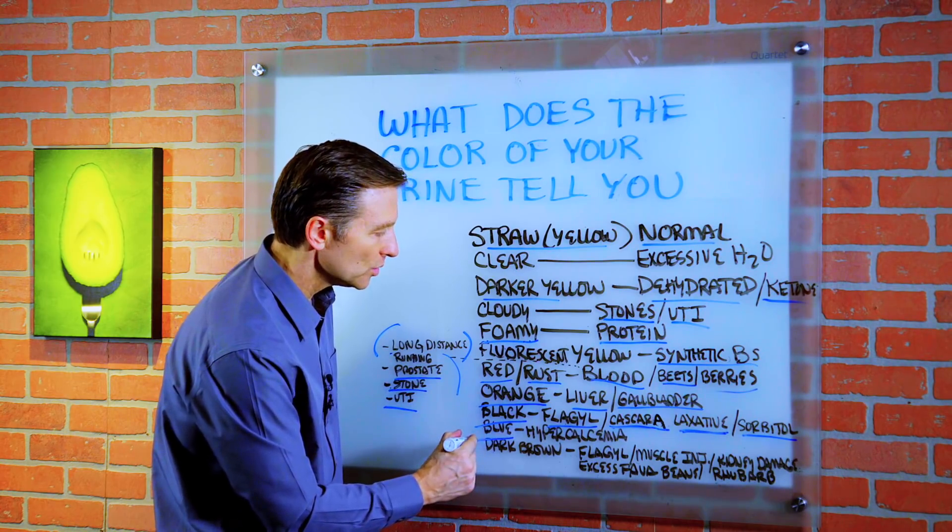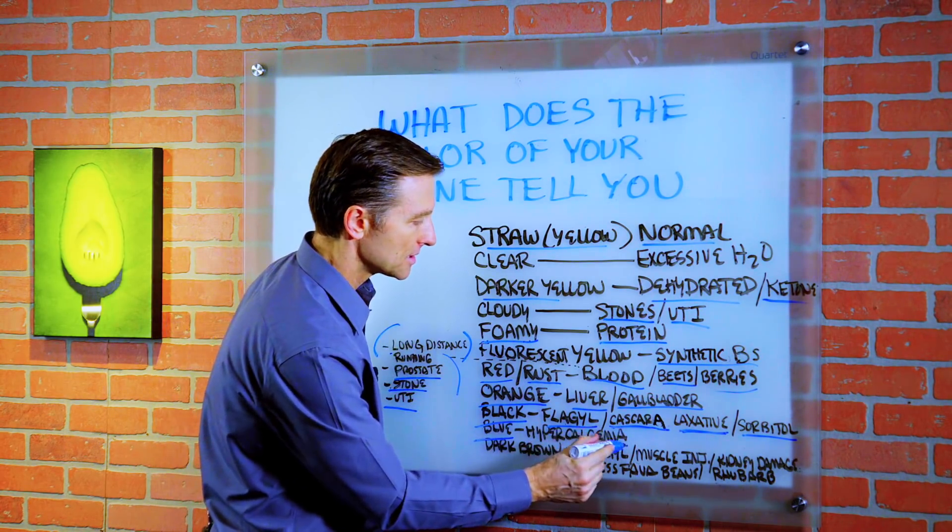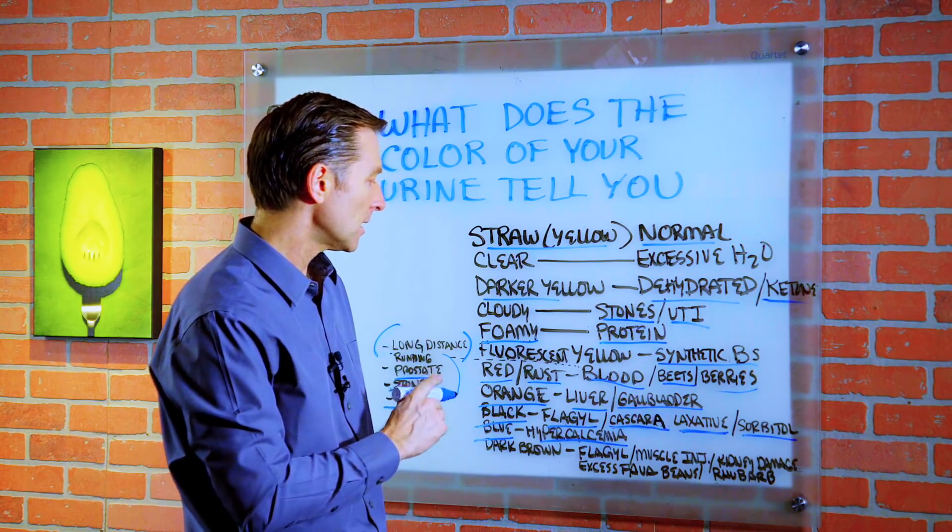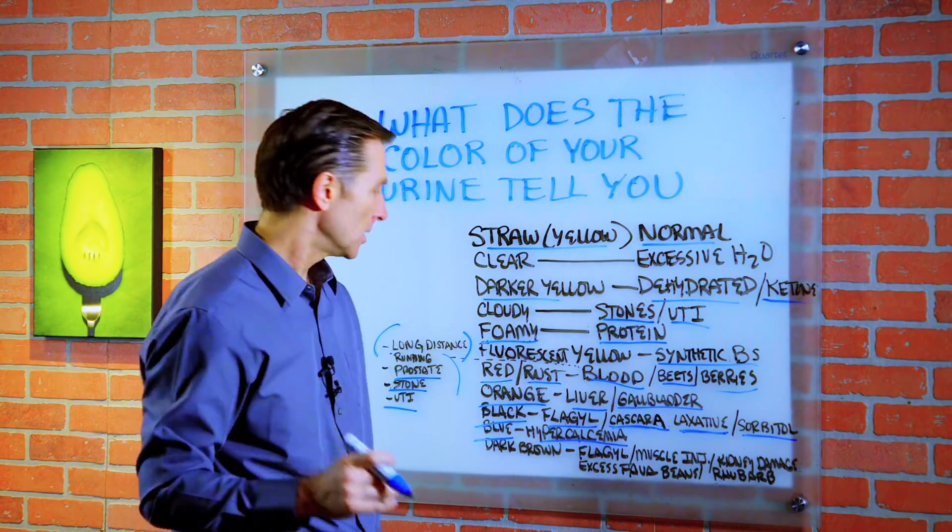If your urine is blue, potentially it could be hypercalcemia. You have too much calcium in your blood, and that could come from actually too much vitamin D, by the way.